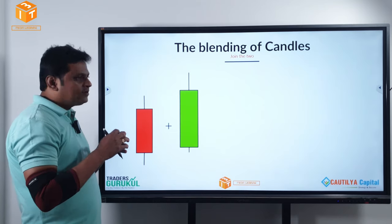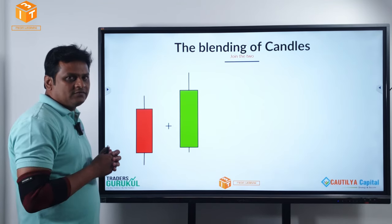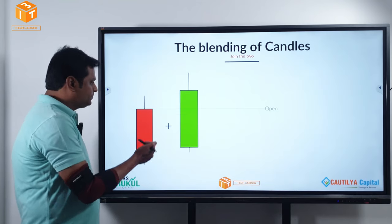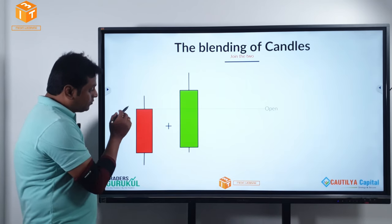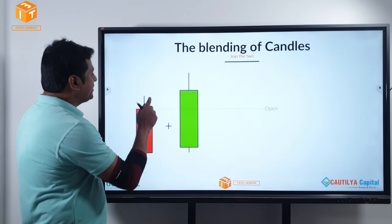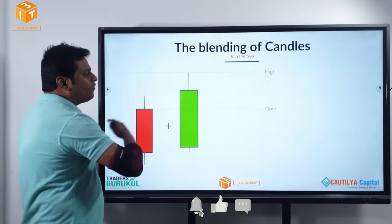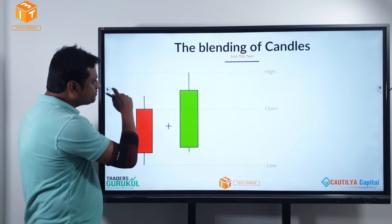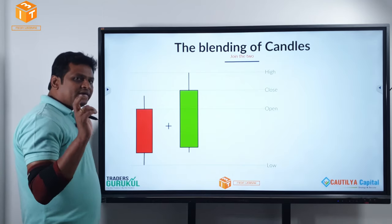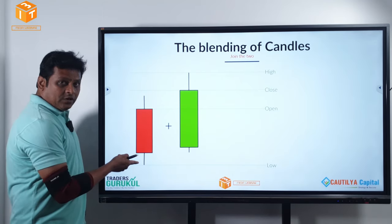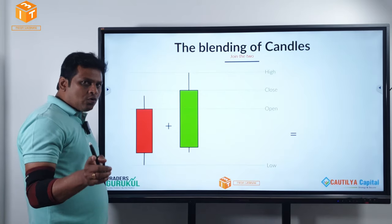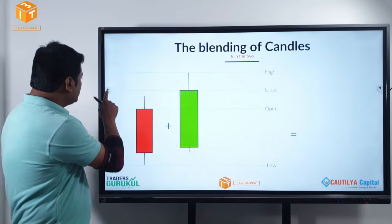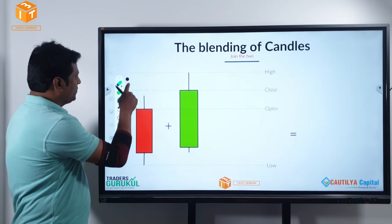Now let's try to blend these two candles — combine them and try to get a bigger candle, a higher time frame candle. How do we do that? First things first, take the open of the first candle. The price opened here and closed here. Second, take the highest high of all the candles — in this scenario you have only two candles. Then take the lowest low of all the candles, and finally take the close of the last candle.